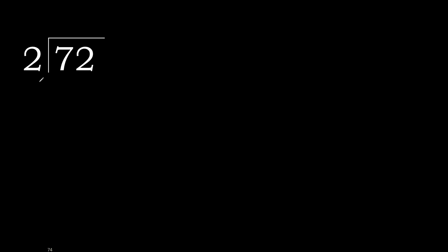72 divided by 2. 7 — 2 is not less, therefore with 7: 2 multiplied by which number is nearest to 7 but not greater? 2 multiplied by 4 is 8 — 8 is greater. 2 multiplied by 3 is 6 — 6 is not greater. 7 minus 6 is 1.